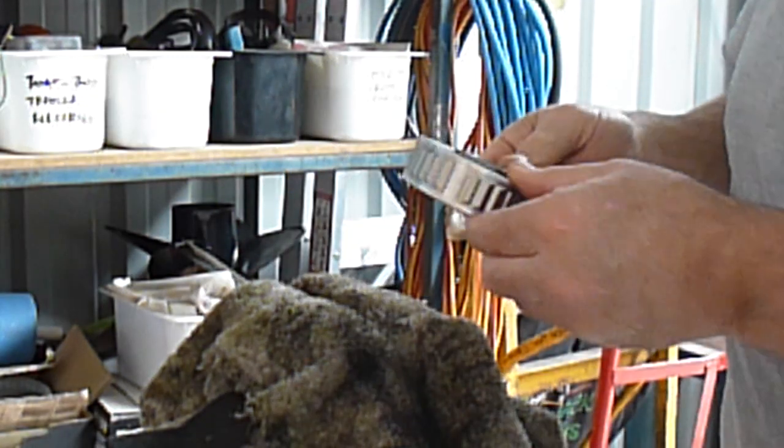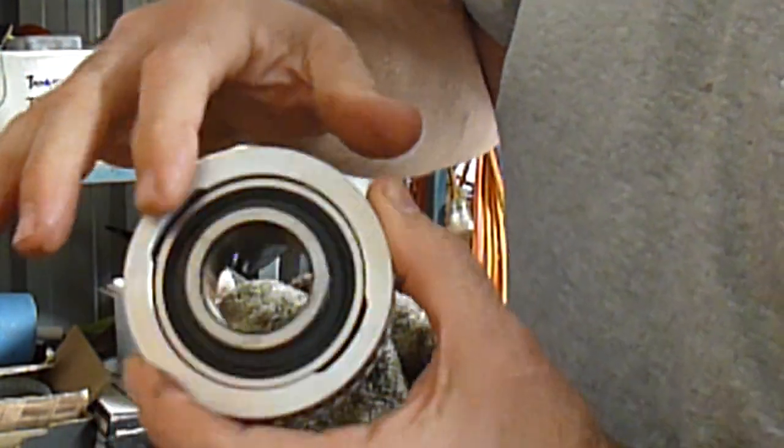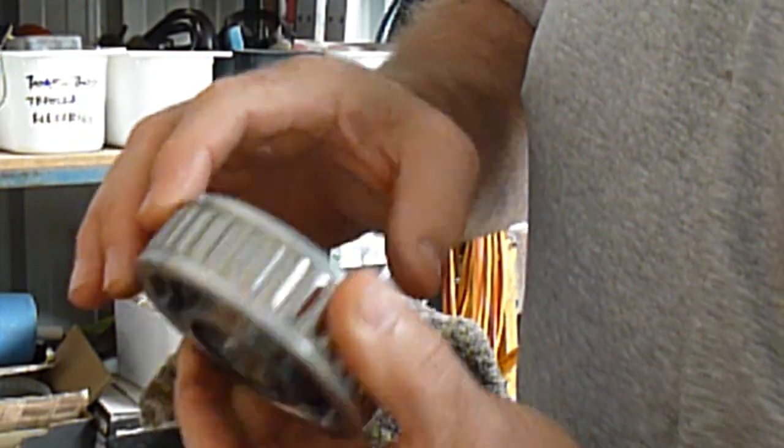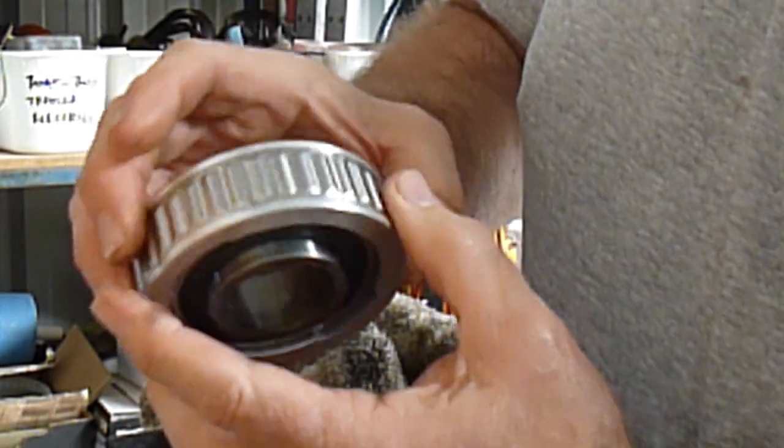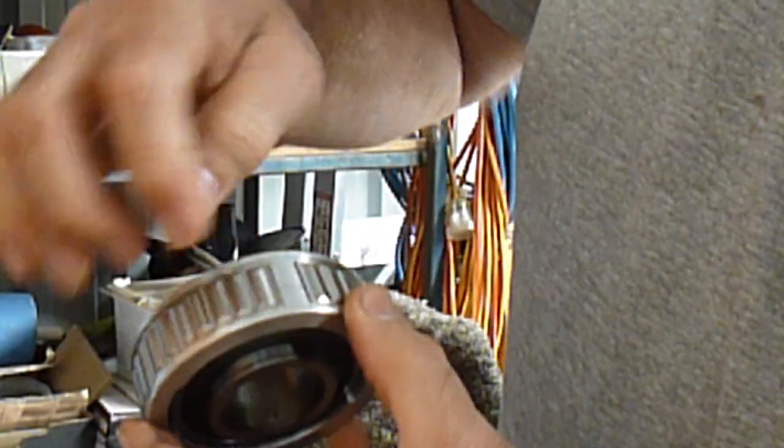So we have our gimbal bearing. Which way round do we install it? You'll see there's a couple of slots here. No slots on the other side. These slots, this is a sealed gimbal bearing so there's no grease hole there at all, there's no grease slot.